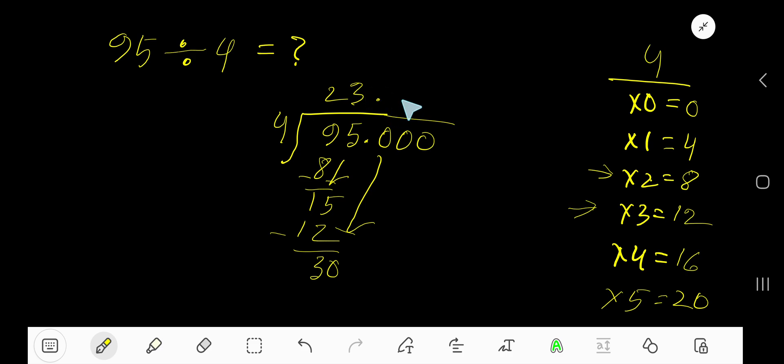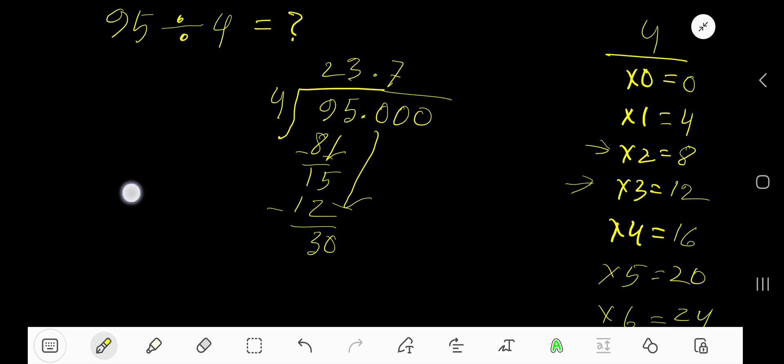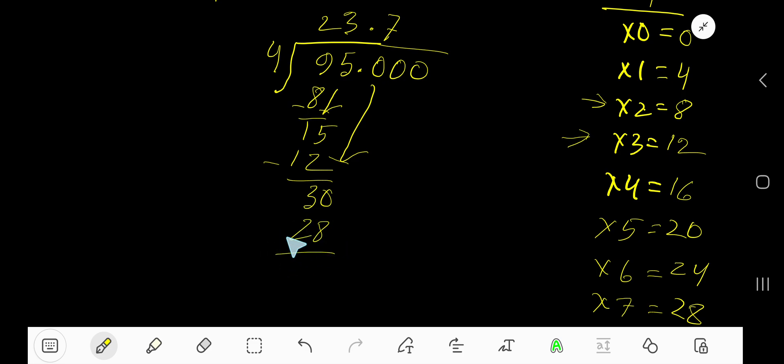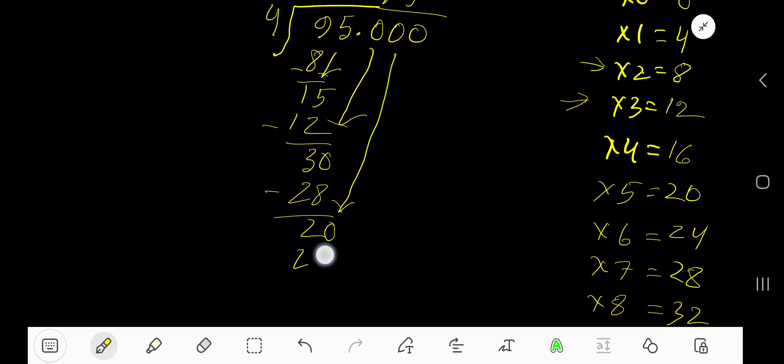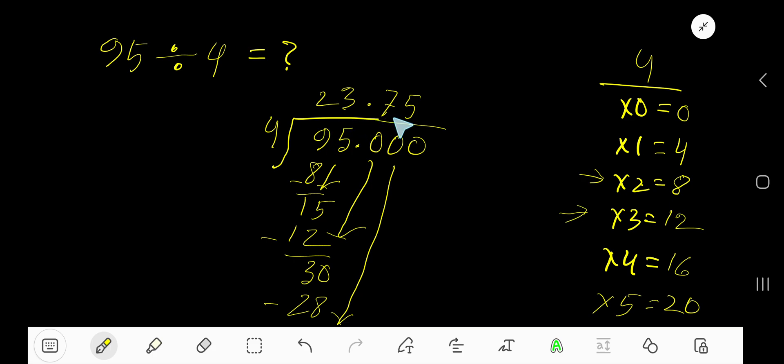You are getting 2. Bring down the next zero. 4 goes into 20 how many times? 5 times. So write 5. 5 times 4 is 20. Your remainder is 0. This means that we are done, so our answer is 23.75.